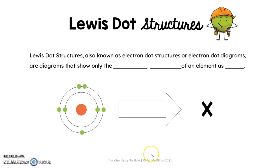A Lewis dot structure is also known as electron dot structures or electron dot diagrams. You can see it as either any one of these phrases, but they're all the same thing.